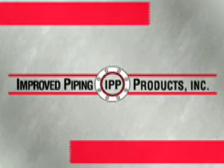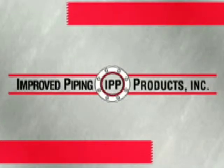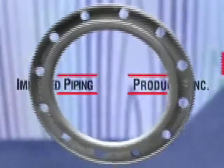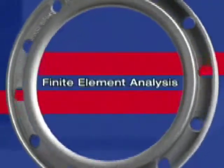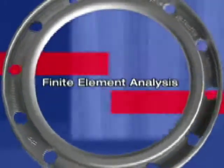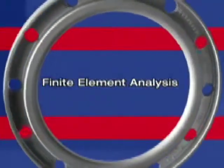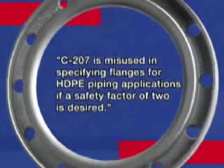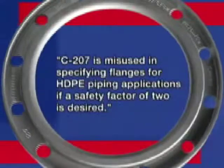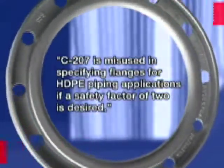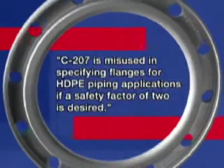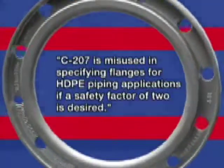IPP has used finite element analysis to evaluate each and every flange size shown on AWWA C207 Table 2, Class D, and Table 4, Class E, up to 63 inches, and has concluded that C207 is misused in specifying flanges for HDPE piping applications at the stated pressure ratings, if a traditional safety factor of 2 is desired, as it is for steel pipe applications.